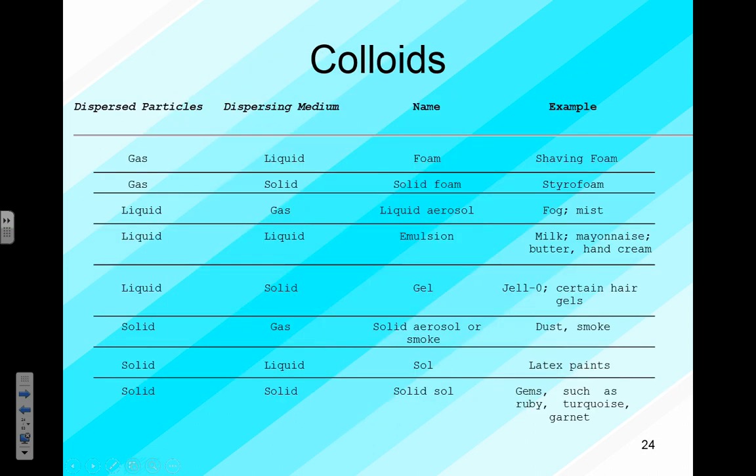There are lots of colloids in everyday life: shaving cream, styrofoam, fog, mist, milk, mayonnaise, butter, cream, jello, dust, and smoke. In each case we have a dispersed particle in a dispersing medium — they're not dissolving into very small pieces, but breaking up into intermediate-sized pieces small enough that the motions of the dispersing medium keeps them mixed. It appears homogeneous even though it's really not.